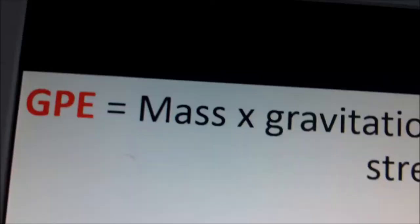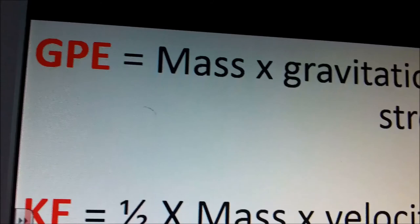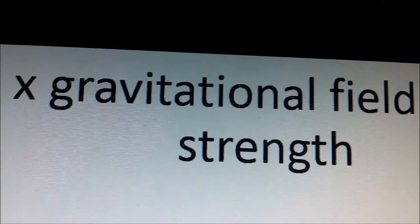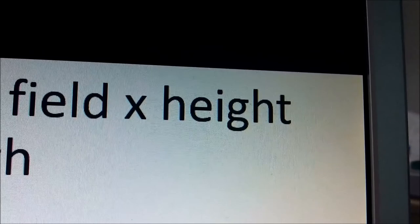There are two equations you need to be able to use. The first one is to calculate GPE. GPE is mass times gravitational field strength, which on Earth is usually 10, unless the examiner gives you a different number, times the height.